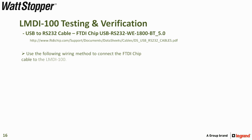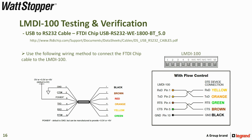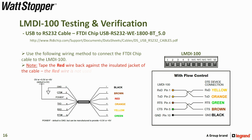Use the following wiring method to connect the FTDI chip cable to the LMDI100. Please note that you need to tape the red wire back against the insulated jacket of the cable, as the red wire is not used.